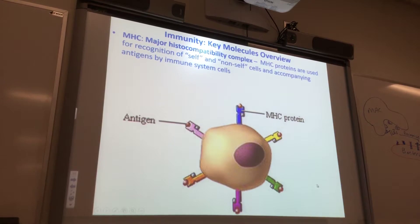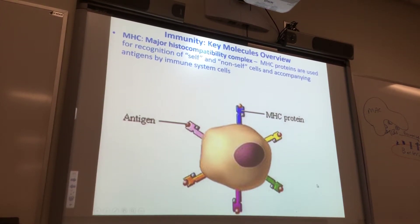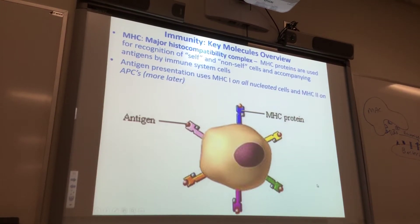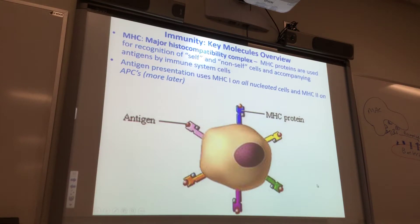Your immune system recognizes these MHC proteins as self, so it won't kill your own cells because of these dog tags. But MHC proteins can also present foreign antigens for your immune system to recognize. There are MHC1 and MHC2. Antigen presentation uses MHC1 protein, found on all nucleated cells. MHC2 proteins are found on antigen-presenting cells.